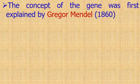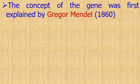In the 1860s, Gregor Mendel conducted experiments on pea plants, which laid the groundwork for modern genetics.